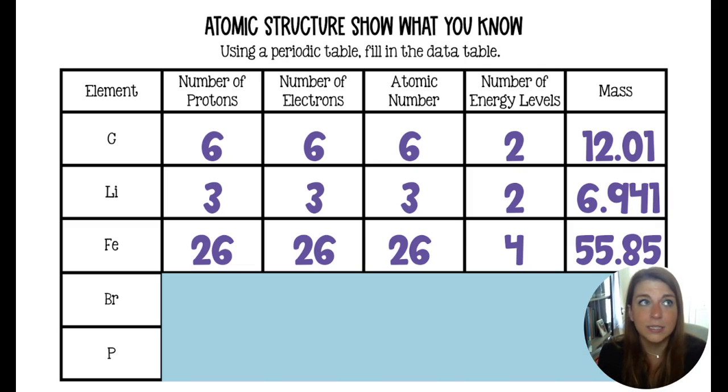Iron symbol is Fe because it comes from Latin. The number of protons is 26. Same with electrons and its atomic number because we're talking about an atom of iron. It is in the fourth row of the periodic table. So its electrons are organized in four energy levels, and its mass is 55.85 or something close to that.